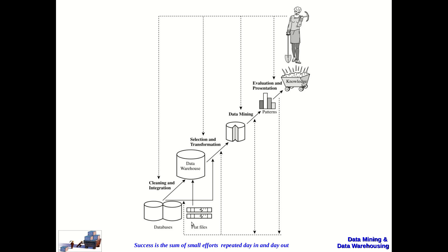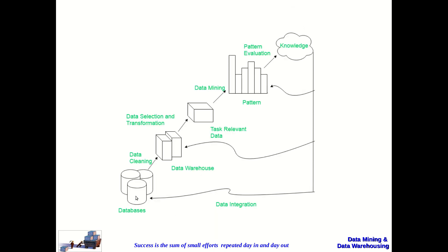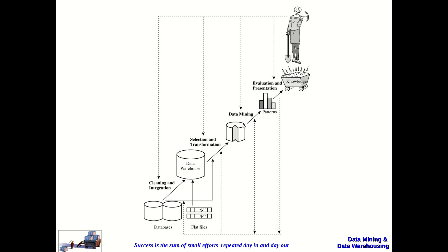We have the database and set of flat files from where the knowledge will be extracted. In the KDD process, data mining is one of the steps of knowledge discovery — that is what we have to understand. Instead of saying data mining is used for extracting knowledge, people will say data mining is used for extracting patterns from existing data, and these patterns will be evaluated, and knowledge will be derived from the database. That is why data mining becomes one of the steps of knowledge discovery.